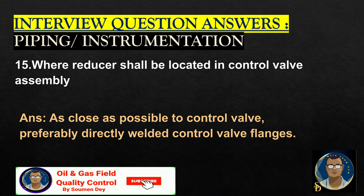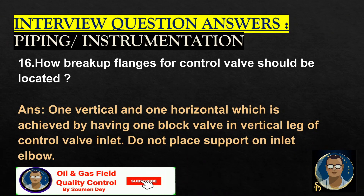Where shall reducers be located in a control valve assembly? As close as possible to the control valve, preferably directly welded to the control valve flanges. How should breakup flanges for a control valve be located? One vertical and one horizontal, which is achieved by having one block valve in the vertical leg of the control valve inlet. Do not place a support on the inlet elbow.